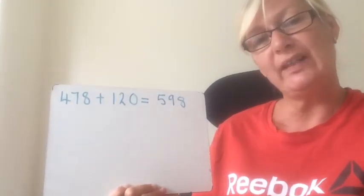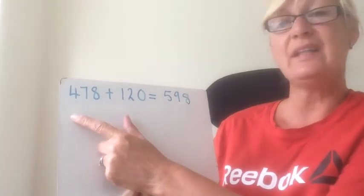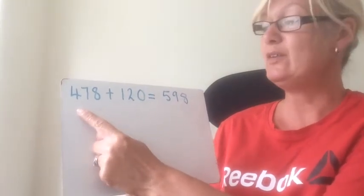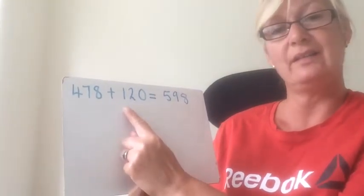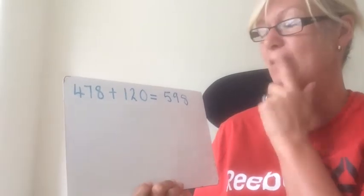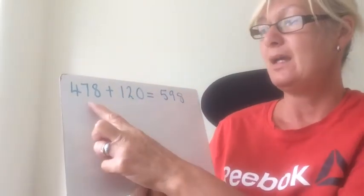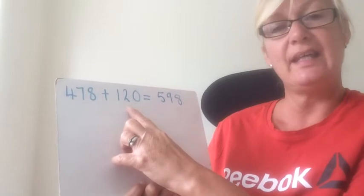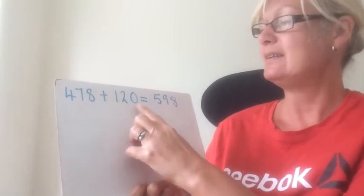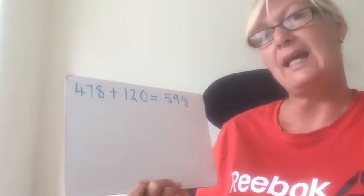Now the other way of course is partitioning. We could have added the hundreds up first. So 400 and 100 is 500. You've got to remember that. Seventy and twenty is ninety. And eight plus zero is eight.